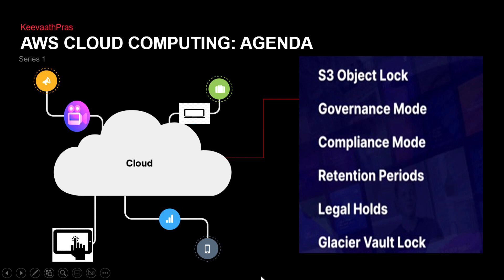In today's lecture we are going to be seeing about object lock. So what did we see in the previous lecture? The lifecycle management — how to actually move the objects from S3 standard to infrequently accessed to glacier. Glacier deep archive is anything more than 180 days, glacier is always greater than or equal to 90 days, infrequently accessed and one-zone infrequently accessed is greater than or equal to 30 days. We saw that, and by clicking a checkbox we should be able to do lifecycle management.